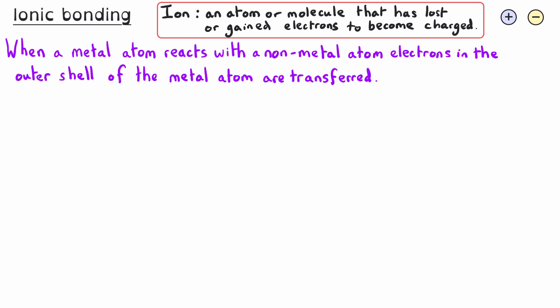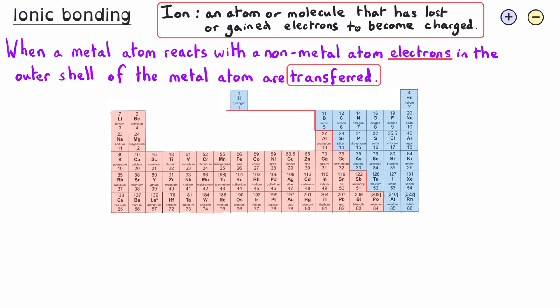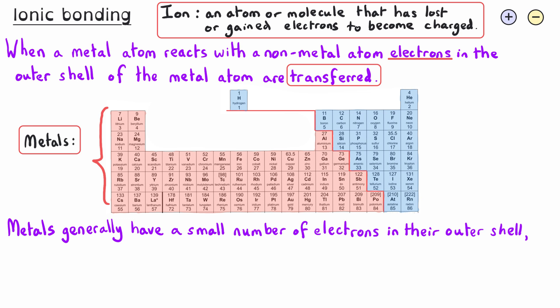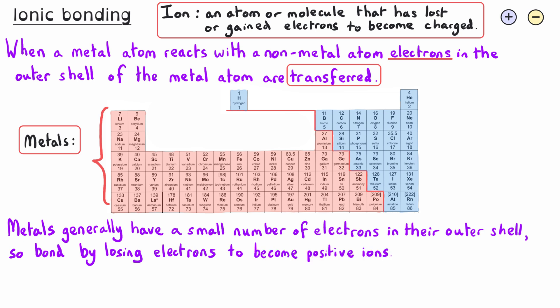When a metal reacts with a non-metal, electrons in the outer shell of the metal atom are transferred. Metals, which are found on the bottom and the left of the periodic table, generally have a small number of electrons in their outer shell. So to form bonds and get a full outer shell, they lose their outer shell electrons. Since electrons have a negative charge, this means that metal atoms become positively charged metal ions.